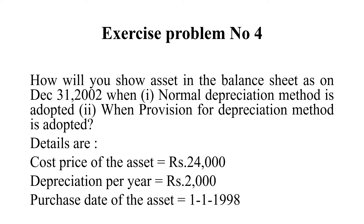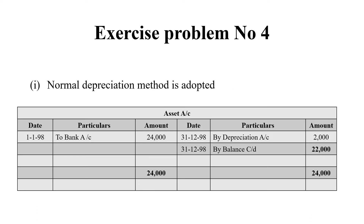Let's see how we have to show this. This is the first method — where provision for depreciation is not maintained. As on 1.1.1998, we have purchased the machinery for Rs. 24,000. So, on the debit side, bank account Rs. 24,000. On the credit side, by depreciation Rs. 2,000. So the balancing figure is Rs. 22,000, and the grand total on both sides is Rs. 24,000.